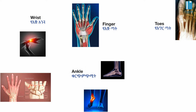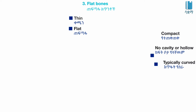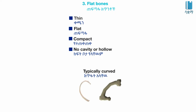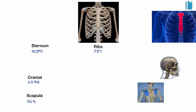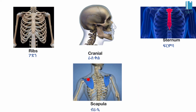Flat bones are thin, flat, and compacted. They have no cavity or hollow, and are typically curved. Examples include the ribs, the sternum, the cranial bone, and the scapula.